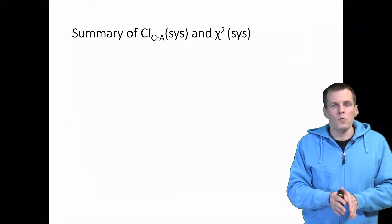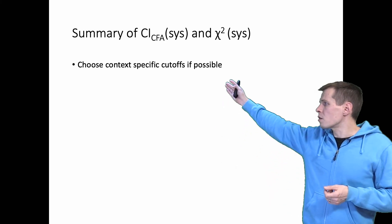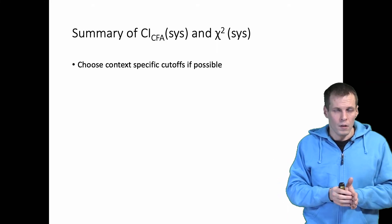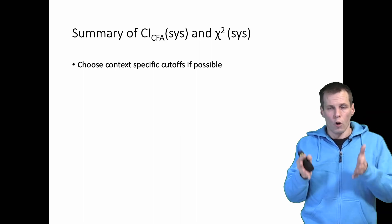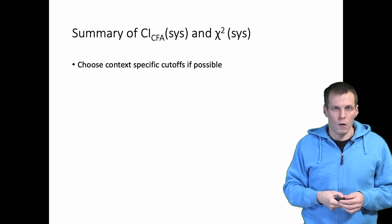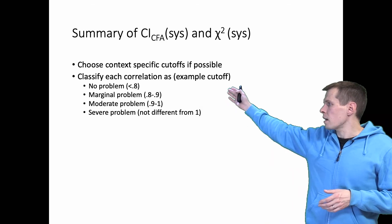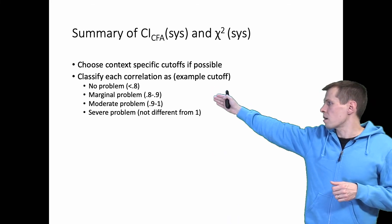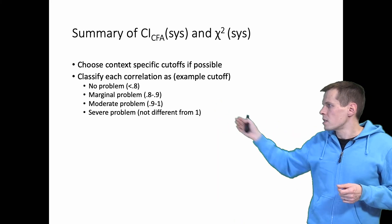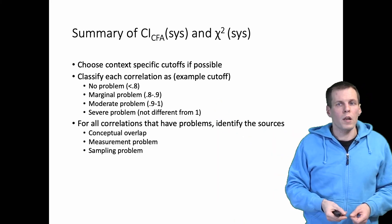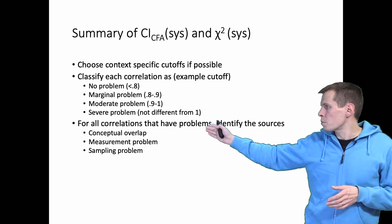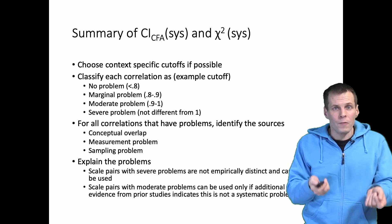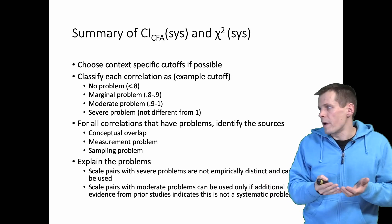In summary, here is how these two workflows function. You first start by choosing context-specific cutoffs if possible — the 0.8 and 0.9 cutoffs presented here are not golden rules but can be adjusted to your context. Then classify each correlation based on those cutoffs: no problem below 0.8, marginal problem 0.8 to 0.9, moderate problem above 0.9, severe problem not different from 1. Based on those classifications, identify the sources — conceptual overlap, measurement problem, and sampling problem are the three possible causes — and then decide what to do based on the severity.